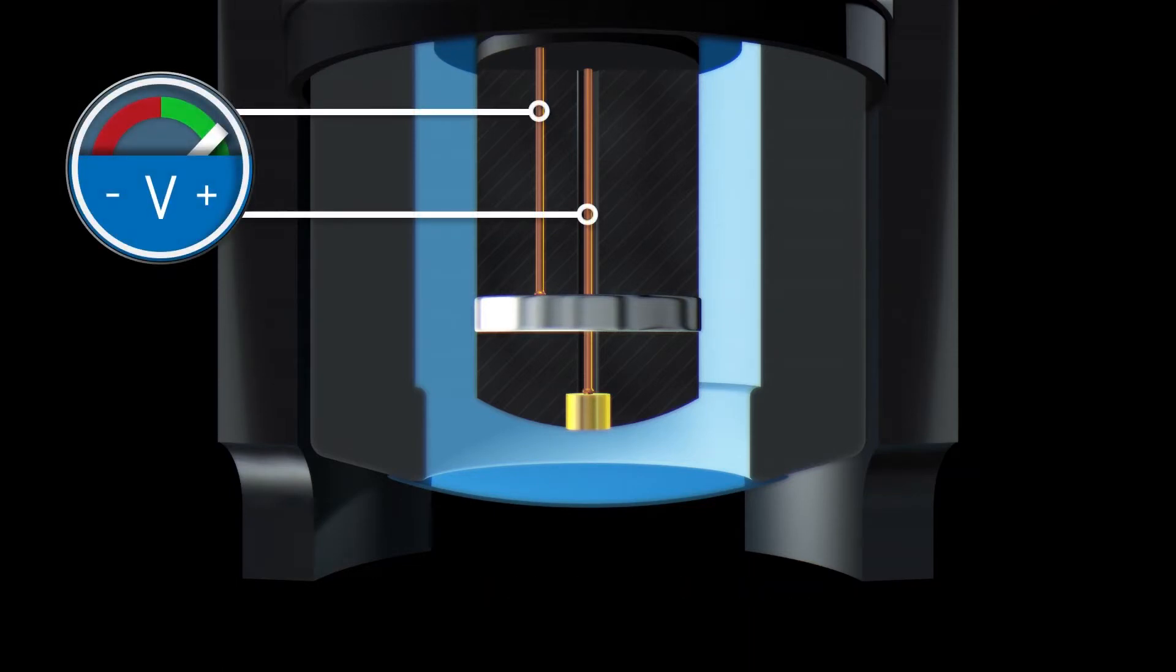The cathode and anode are located in a reaction chamber that is filled with an electrolyte. The reaction chamber is separated from the medium by a membrane. This porous membrane allows dissolved oxygen to diffuse into the sensor.